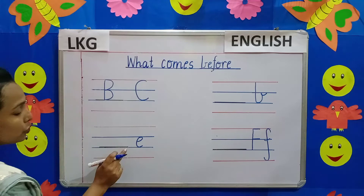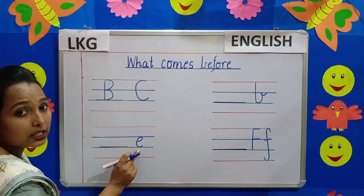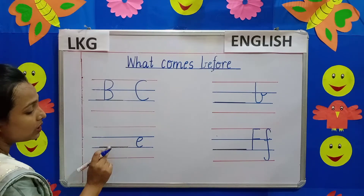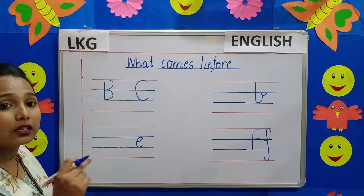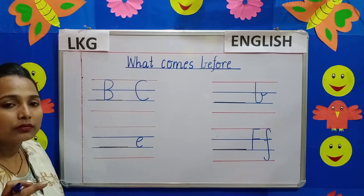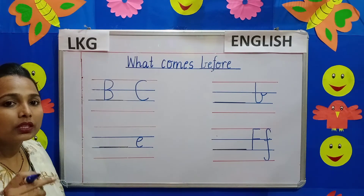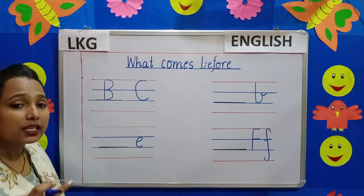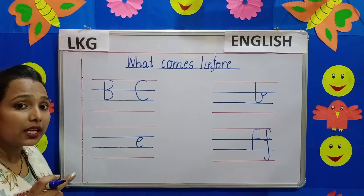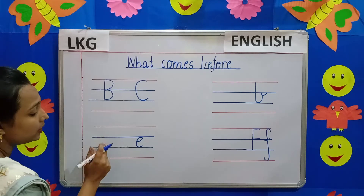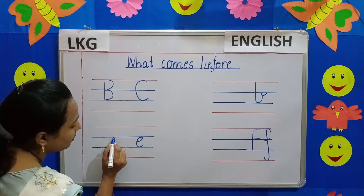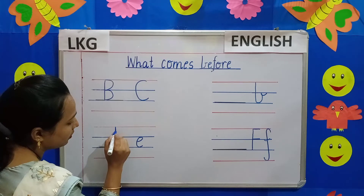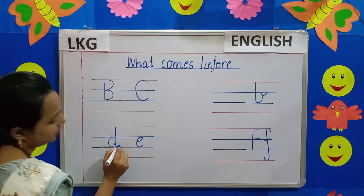Now we come to our next question — small letter E. Which letter comes before E? Let us recall in our mind: A, B, C, D, E. So we will write here small letter D.